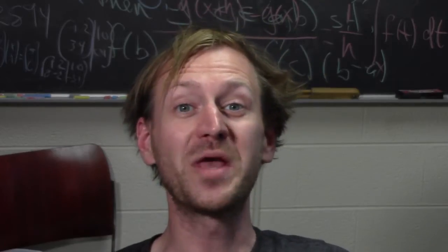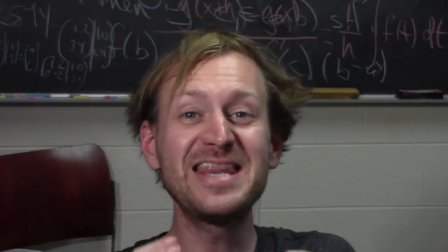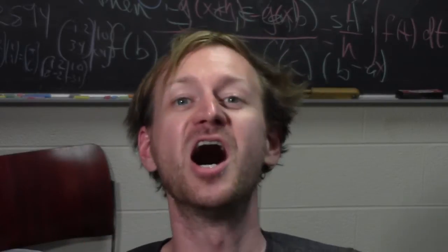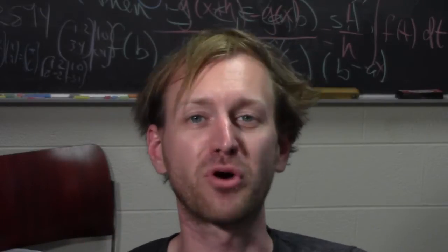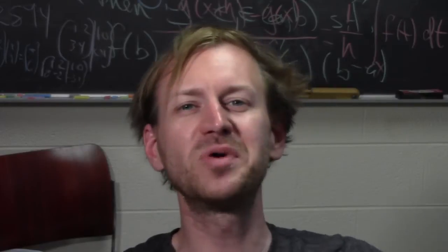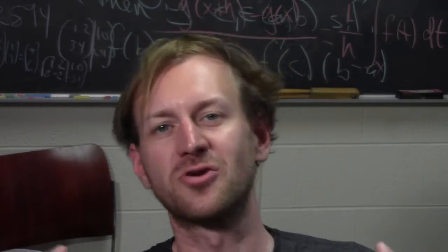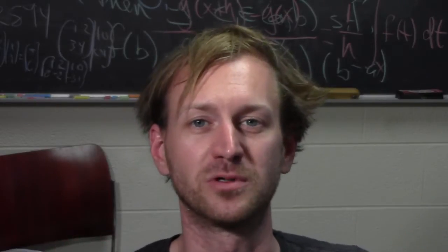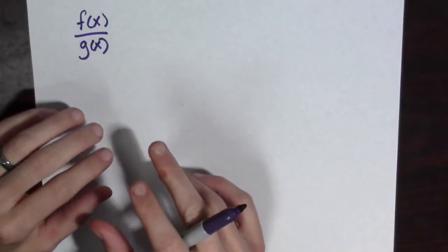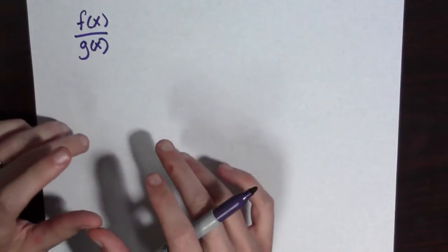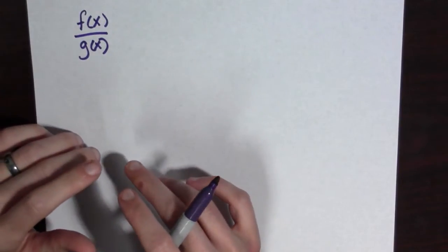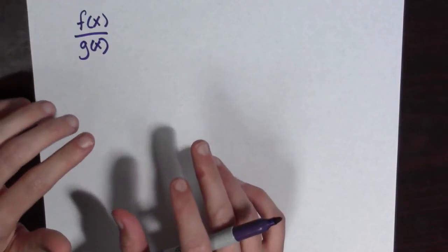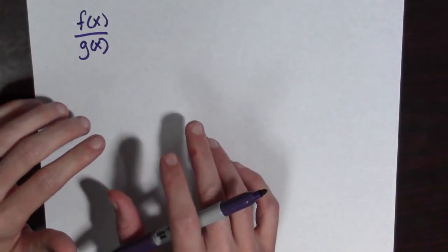We have a nifty geometrical interpretation of the product rule. Let's see if we can adapt it a little bit and use it for the quotient rule. Let's see if we can draw a picture helping us understand why the quotient rule is true.